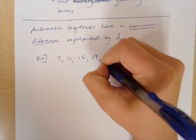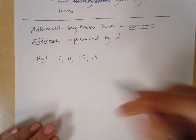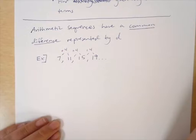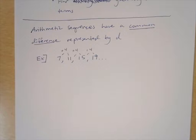19, and so on. This is an arithmetic sequence, and here's why. When we go from 7 to 11, we're adding 4. When we go from 11 to 15, we're adding 4. When we go from 15 to 19, we're also adding 4. That's what we call the common difference — the difference between each term is the same.